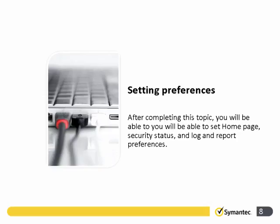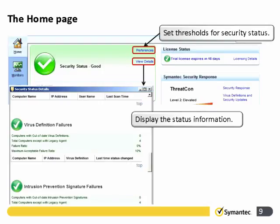Let's look at setting preferences. On the Home page — your real-time snapshot of current network status — we have preferences in blue on the top right. Drilling into that, we can set the thresholds for the security status. The view details option enables us to analyse the information that has set a particular status. In this case the status is good and green.